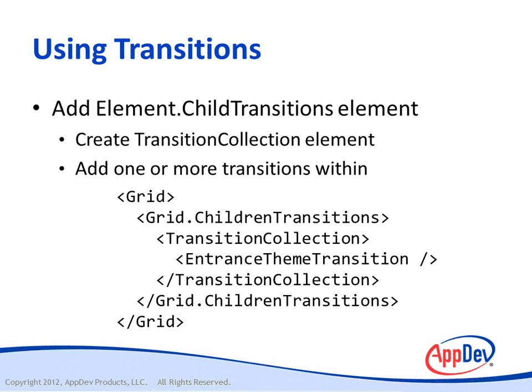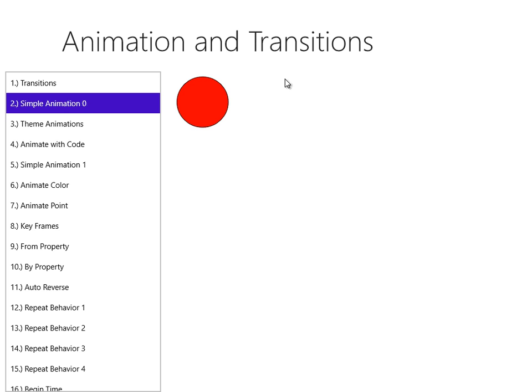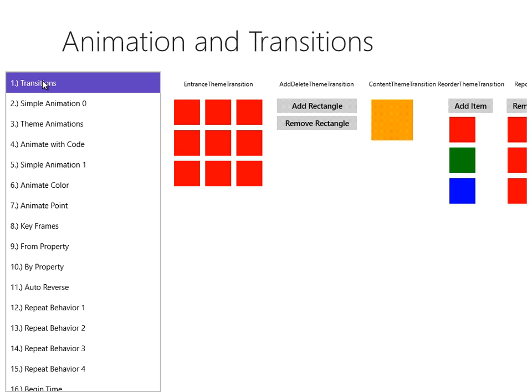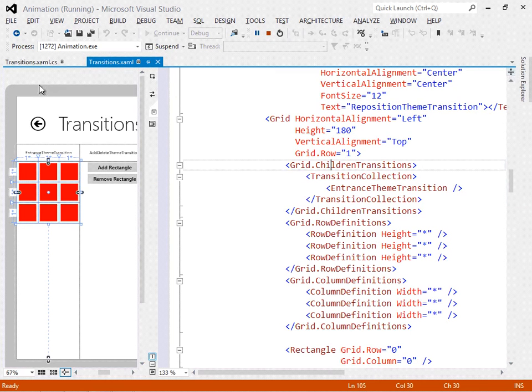Let's look at markup and examples that demonstrate each of the five transitions we've discussed. I've loaded our sample project named simply 'animation' and I'd like to demonstrate the Entrance theme transition, but to do that I have to load the page. So I've moved to a different page and now I'll move back to this page — watch carefully the grid in the upper left-hand corner. As the rectangles load into the first grid, they slide neatly into place. Now it's important to note that they slide into place in the order that they're defined in the markup.